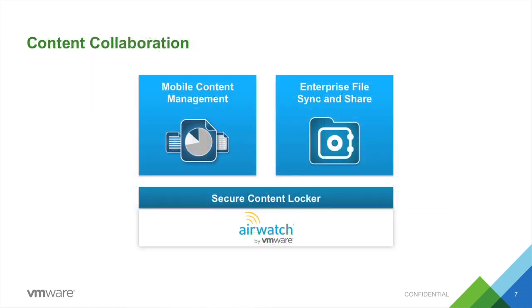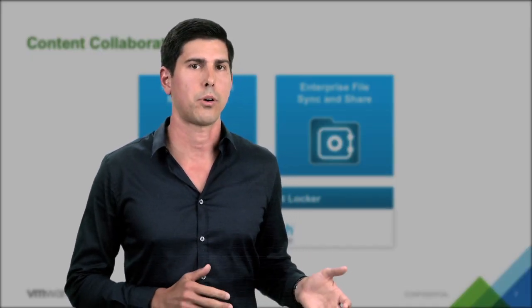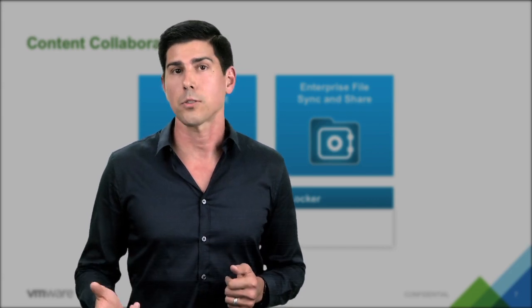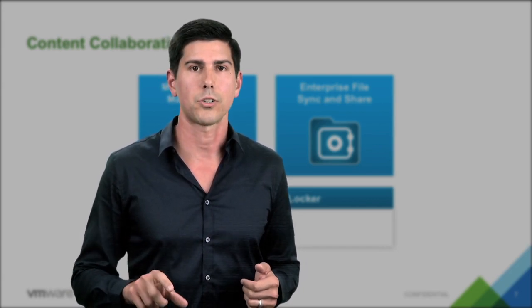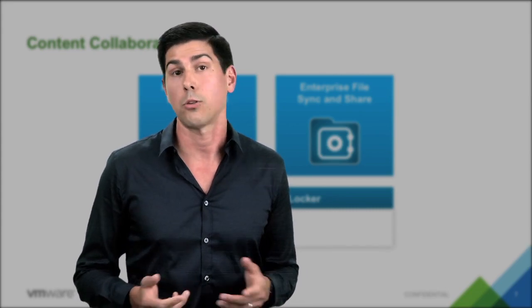Next is Content Collaboration, which focuses primarily on two technology areas. First, we have Mobile Content Management, or MCM, which is all about connecting end users' devices to corporate information and data repositories. Typically these repositories are data stores like SharePoint or CIFS shares, but they can also include cloud solutions like Microsoft OneDrive, Google Drive, Box, and many others. MCM enables users to get access to all these repositories with just a couple of clicks, without needing to open a VPN or re-authenticate.